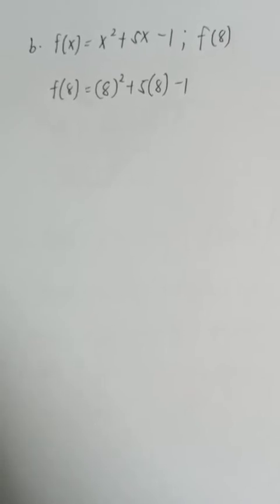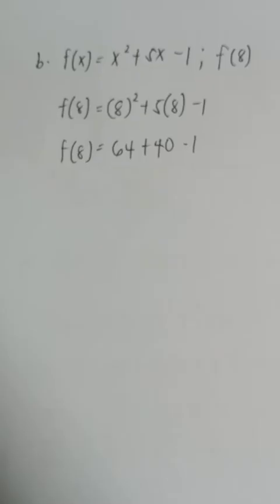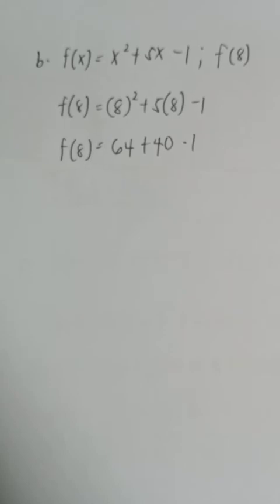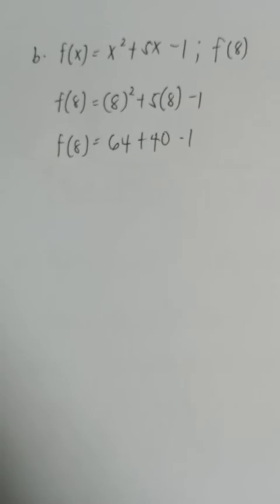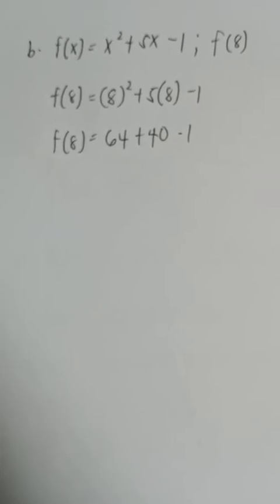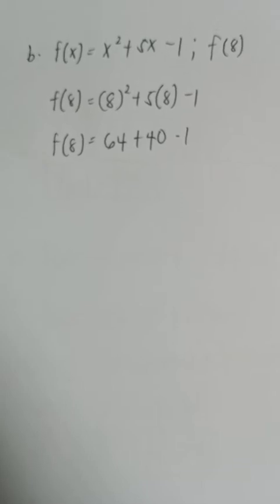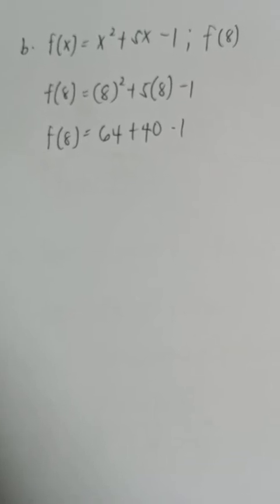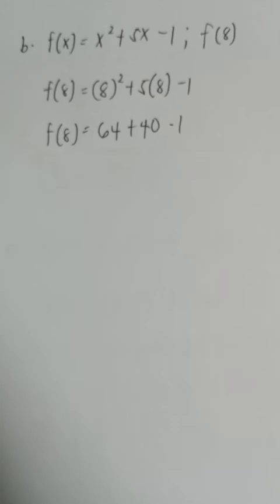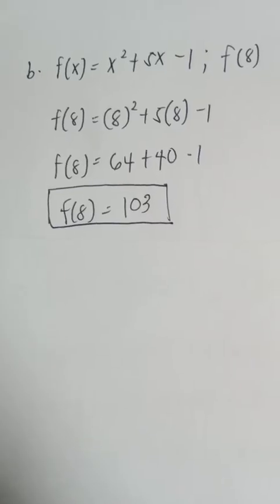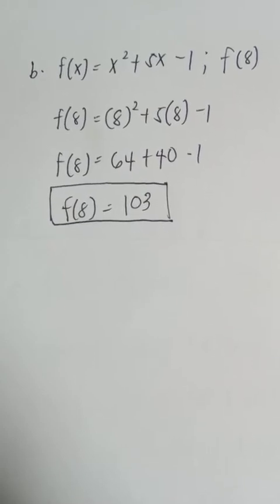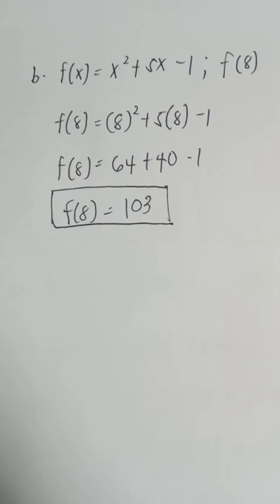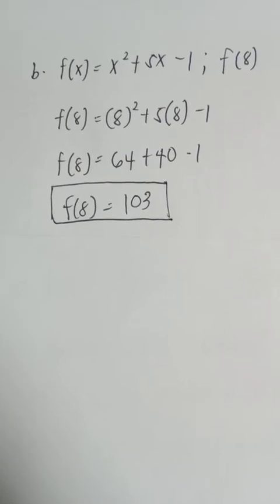And then simplify. 8 squared, or 8 times 8, is equal to 64, plus 5 times 8 which is 40, then bring down the minus 1. So you have f of 8 is equal to 64 plus 40 minus 1. Do the addition and subtraction: 64 plus 40 is 104, minus 1 is equal to 103. Therefore, f of 8 is equal to 103.